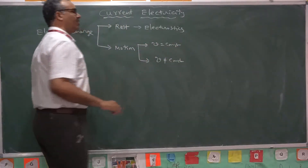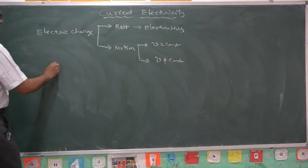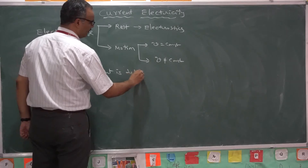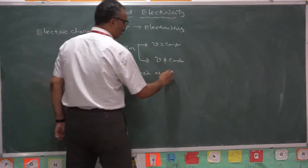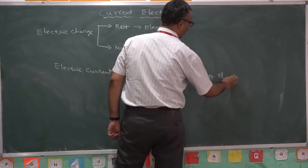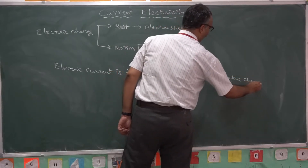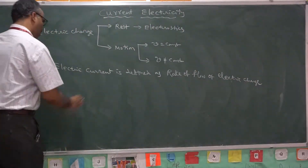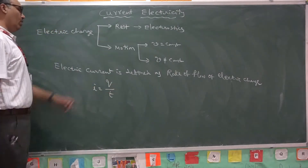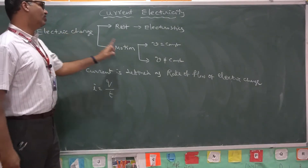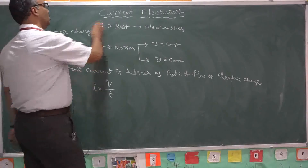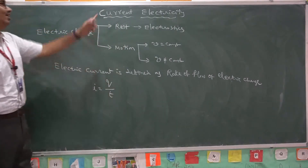If charge is moving with constant speed, it constitutes electric current. Electric current is defined as rate of flow of electric charge. If I is the letter used to represent electric current, and Q is the charge flown within a time interval T, then Q by T is called electric current. The study of electric current is called current electricity — the study of electric charges under motion with constant speed.